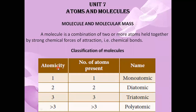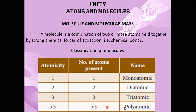So for atomicity: if only one atom is present, the atomicity is 1 and it is called monoatomic. If 2 atoms are present, the atomicity is 2 and it is called diatomic. If 3 atoms are present, the atomicity is 3 and it is called triatomic. More than 3 atoms is called polyatomic with atomicity more than 3.